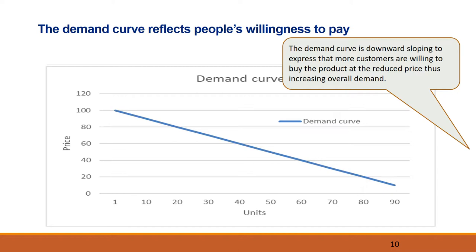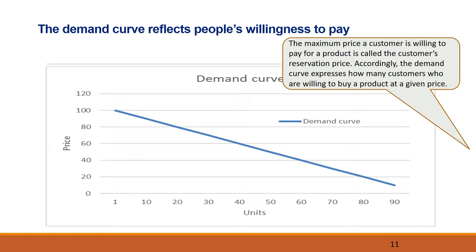This provides for a demand curve, expressing how many units of a product a company will sell at a given price — a curve taking into account that few consumers are willing to pay a high price and many consumers are willing to pay a low price, and that each consumer has different preferences in respect to a maximum price. As it appears from the curve, this particular company will only sell one unit if the price is 100, but will sell 90 units if the price is only 10. The maximum price which a consumer is willing to pay for a product is called the consumer's reservation price. The demand curve is downward sloping, to express that more consumers are willing to buy the product at a reduced price, thus increasing overall demand.